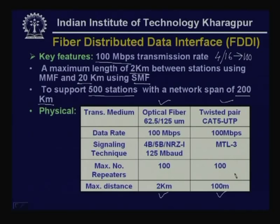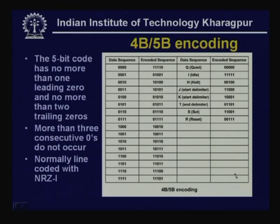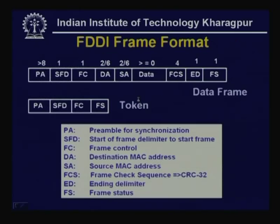FDDI uses 4B/5B encoding where a 5-bit code has no more than 1 leading zero and no more than 2 trailing zeros — necessary for clock recovery purposes. Normally it is line encoded by NRZ-I. This block encoding and line encoding are combined to produce the encoding for FDDI.